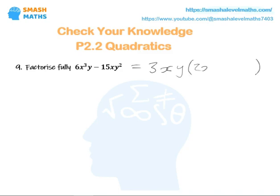So we get 3xy(2x² − 5y). Looking at that and thinking: is there anything else I can do with that? Still, absolutely not. So that really is all you can do with that one, and it's as simple as that.